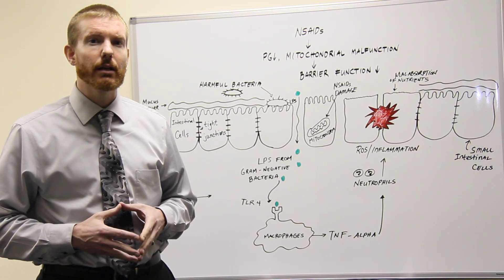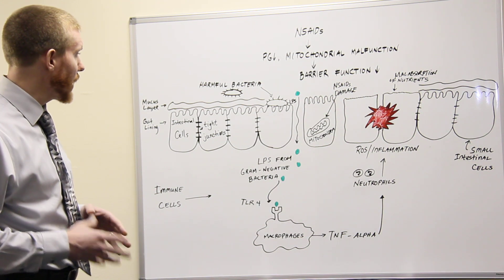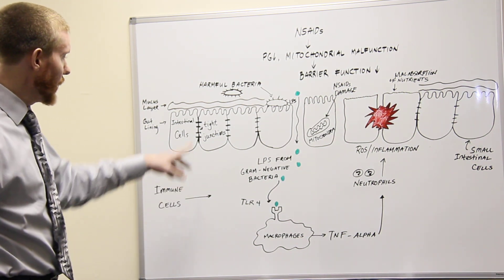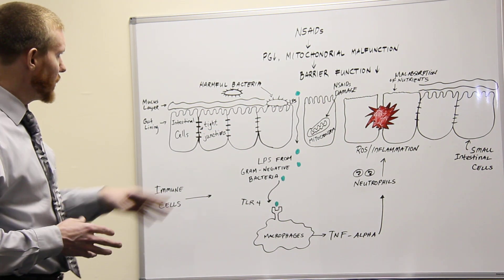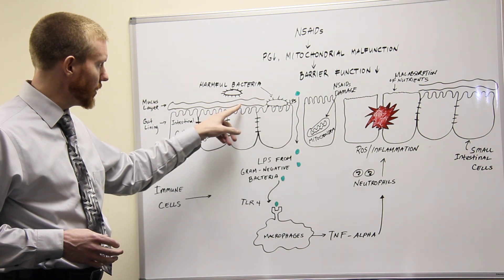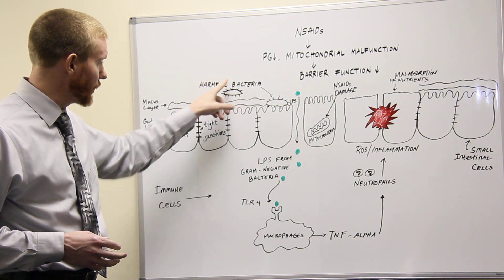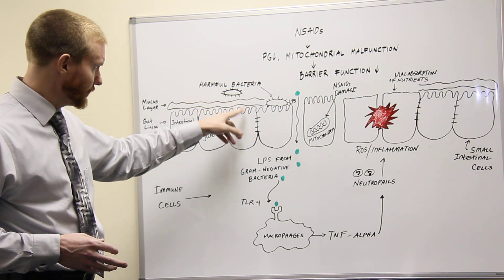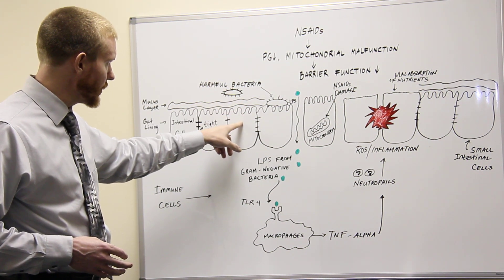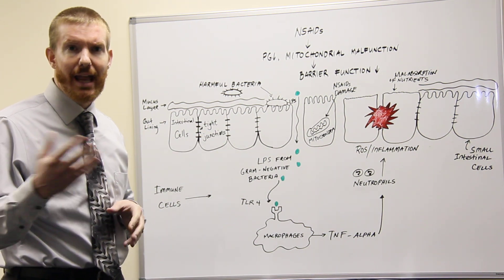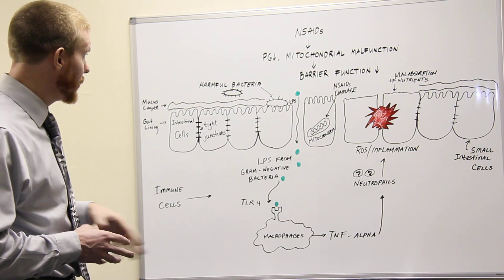A lot of these other functions that prostaglandins do in the body are actually very beneficial and needed. One of the main things that prostaglandins do is they stimulate the production of mucus on top of our gut lining. This mucus layer nourishes our intestinal cells and protects them from harmful bacteria, separating harmful bacteria from the intestinal cells — because once harmful bacteria attach to the intestinal cells, this causes damage and inflammation to the cells of the gut lining.